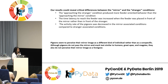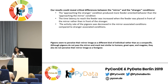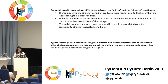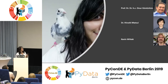We concluded that approaching the stranger condition produced more feeder-oriented behavior than approaching the mirror. Time to reach the feeder increased when food was placed in front of the mirror rather than in front of the stranger. Activity rate was decreased in mirror-associated conditions compared to stranger-associated conditions. We conclude that mirror self-cognition is not a binary test — you can't simply say this animal has it or doesn't. There are steps in between and we should think about different methodologies to assess different species.